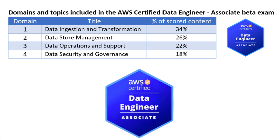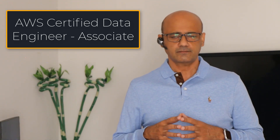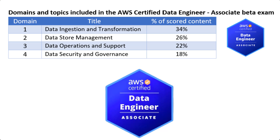Domain 2 is Data Store Management, which covers about 26% of the content. In this domain I'll cover storage platforms, characteristics, storage services and configurations for specific performance demands, data storage formats like CSV and TFT files, how to align data storage with data migration requirements, how to determine the appropriate solution for a specific action pattern, and how to manage logs in Amazon Redshift, RDS, and much more.